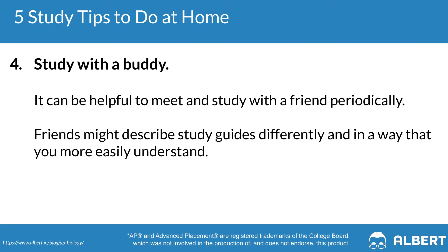Tip four is to study with a buddy or with a group. One of the best ways to make sure that you're studying effectively for your AP Biology exam is to see whether or not you can explain a difficult concept to another person. When you're able to do so, it means there's a higher probability that you've truly mastered that concept. Pair up with a friend and work through concepts that each of you finds difficult, and through this collaboration you can improve both of your abilities to get a four or a five.